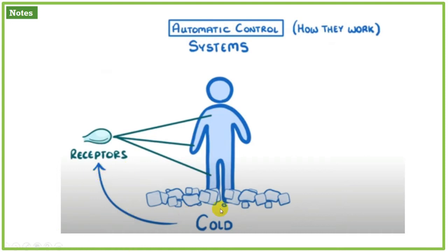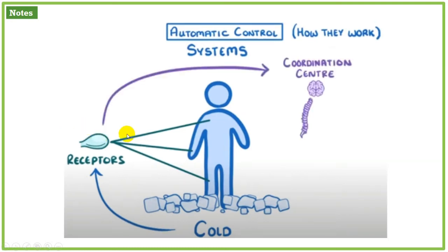Now we are talking about a cold environment. To detect this cold environment change for the body, the receptors detect it and send a message to the coordination center — which is the spinal cord and brain.